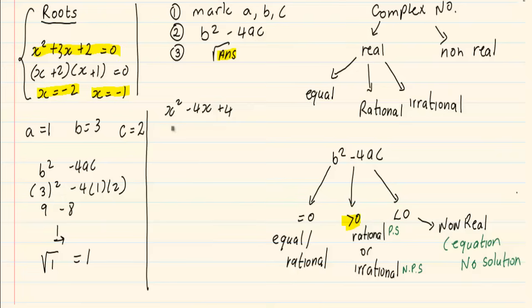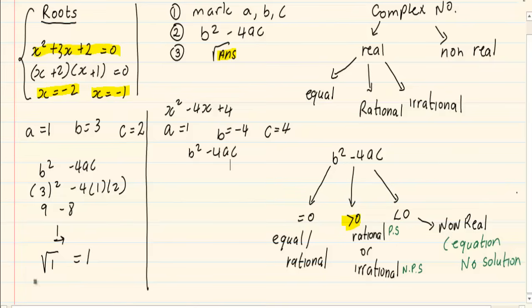So what are the steps? Number 1, you are going to mark a, b, and c. Then we are going to substitute it into the formula b² - 4ac. So I have (-4)² - 4ac.